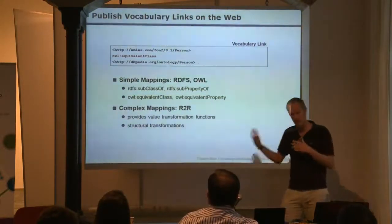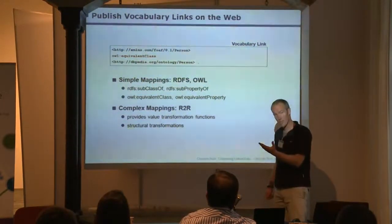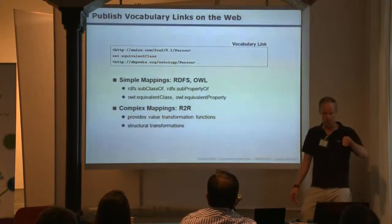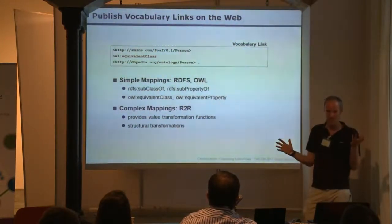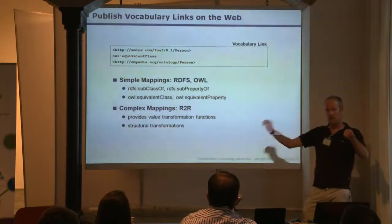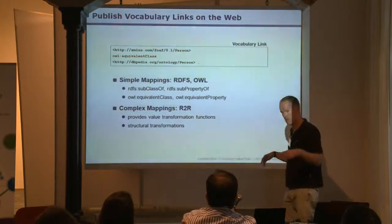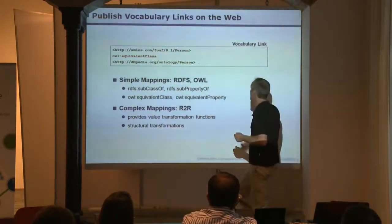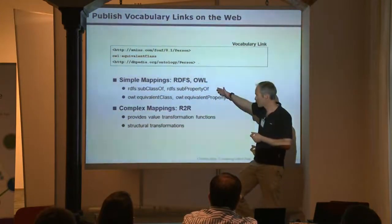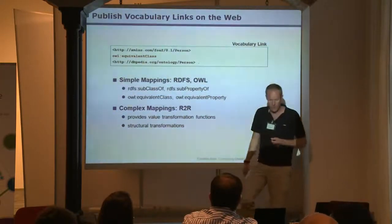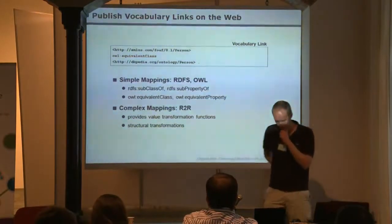You can also publish vocabulary links — meaning one data source uses a proprietary term, you do manual schema mapping or mine some mappings, find out that this term in one vocabulary refers to another term in a different vocabulary, and publish this as an equivalent class link, subclass link, or equivalent property link on the web. Or you can use the R2R language to express and publish more complex mappings on the web.